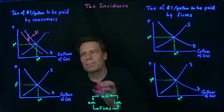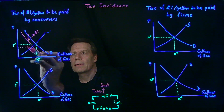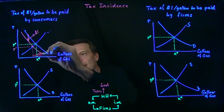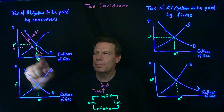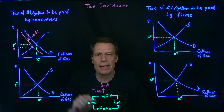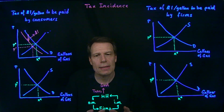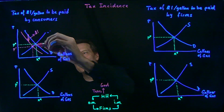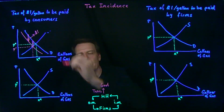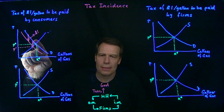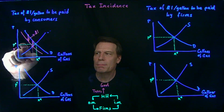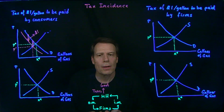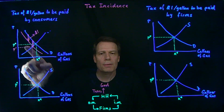That leads us to a new equilibrium with a lower price, which we'll call P', and a lower quantity being transacted in the market. Is that price a dollar lower than the original price? We can see the answer in the picture. The difference between the two demand curves is exactly a dollar. If that distance is a dollar, then the distance that lies below the original price P* is less than a dollar. So the equilibrium price falls, but it falls by less than a dollar.